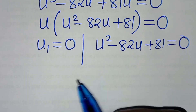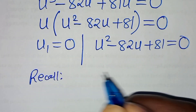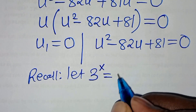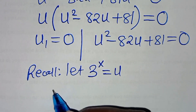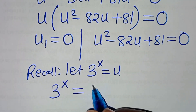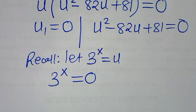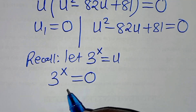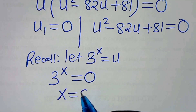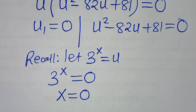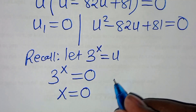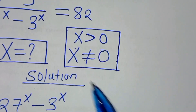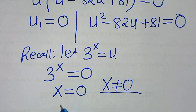From the first part, recalling that 3 to the power of x equals u, substituting gives 3 to the power of x equals 0. However, 3 to the power of x always yields a positive value, so this would imply x equals 0, which violates the condition that x is not equal to 0. Therefore, this part is rejected.